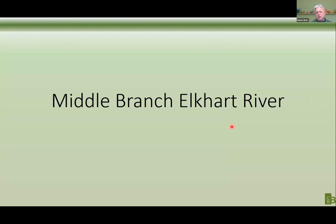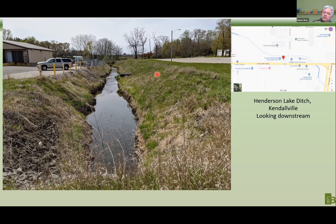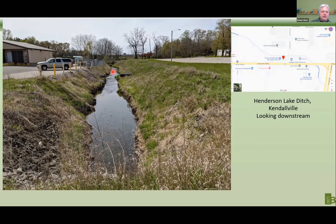Middle Branch is not quite the same story. In Middle Branch the headwaters — keep in your mind what Hutchins and Ool looked like. Hutchins and Ool are stable, the water level was higher, the vegetation was better, we didn't see the scalloping on the sides, and we didn't see direct stormwater inputs coming in from parking lots. Part of this has to do with it running through Kendallville, and part has to do with simply the way it's been drained and managed over time. These are not what we want headwaters to look like, but this is a place where there's an opportunity to do something about it.